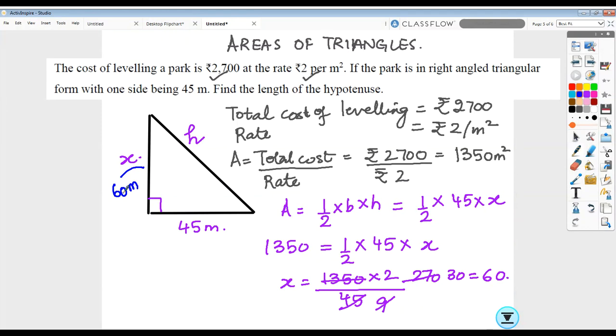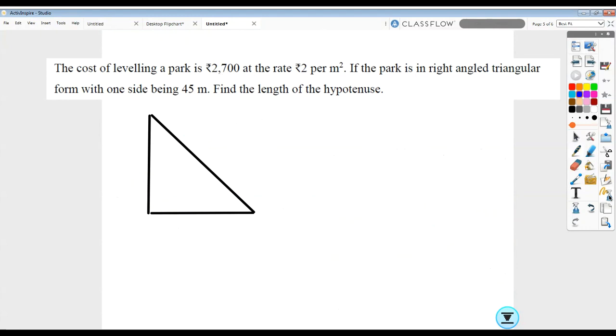Now it becomes very simple for me to calculate the hypotenuse which can easily be taken out by the Pythagorean theorem. So let's try and work with the Pythagorean theorem. We had this as 60, this as 45, and now we have to find out the hypotenuse. So h square is 60 square plus 45 square.